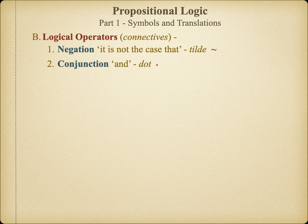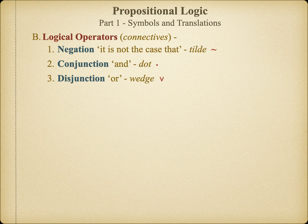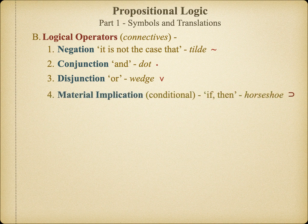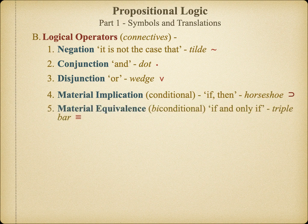But we might also want to say that at least one of the two statements is true. This is called disjunction, and it is symbolized using the wedge. In Unit 1, we learned about hypothetical or conditional statements. The if-then statement is very useful in propositional logic, and it is symbolized using the horseshoe symbol. Finally, we have material equivalence, or the biconditional statement, which is symbolized by using the triple bar.